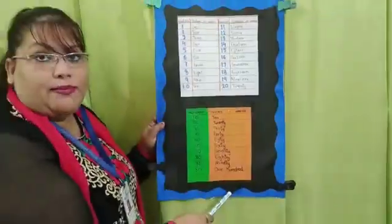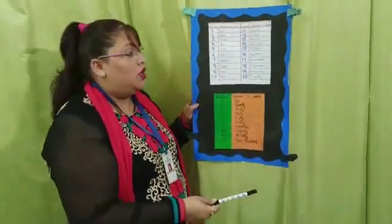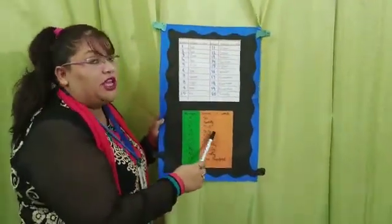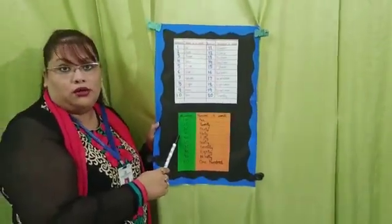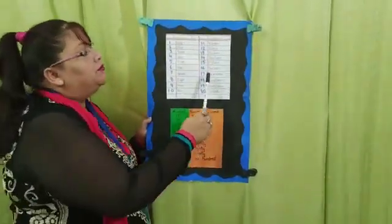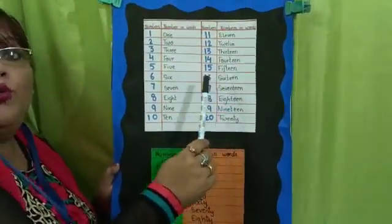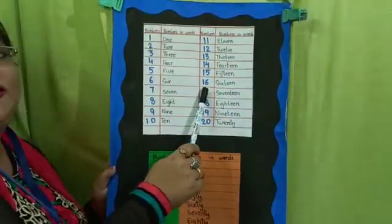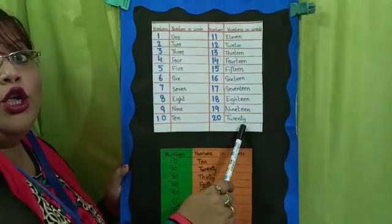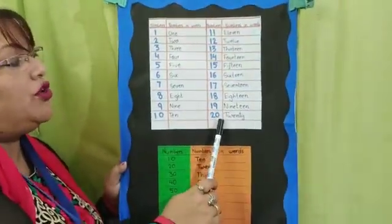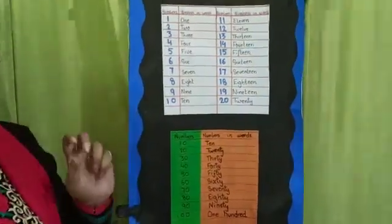These are all your number names. We also learn numerals. In numerals, the spelling will be given to us and we have to write the number. For example, S-I-X-T-E-E-N — we will write 16. T-W-E-N-T-Y — we will write 20. These are called numerals.